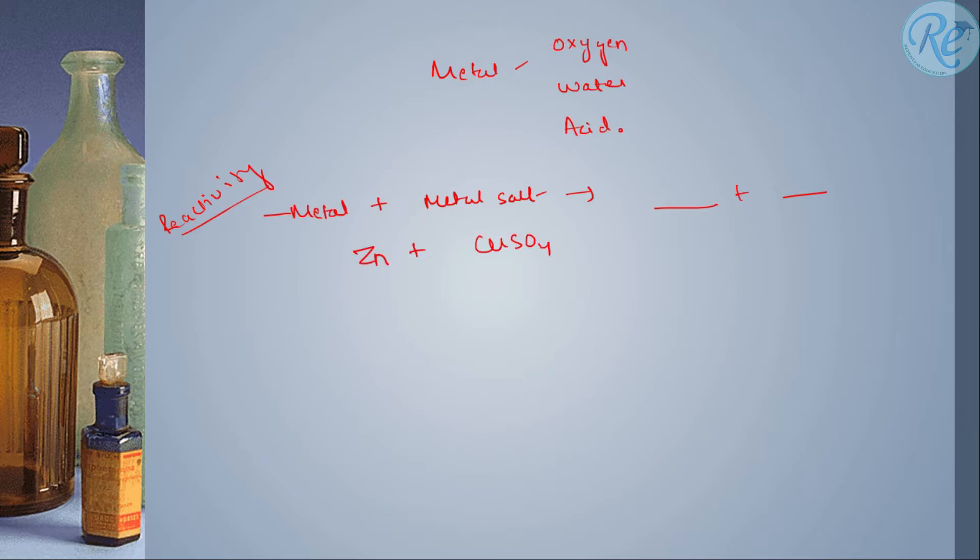For example, when zinc is reacting with copper sulfate, what do you expect the product to be? It is zinc sulfate plus copper. Now what has happened here is that the stronger one has replaced the weaker one from the salt.